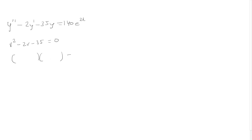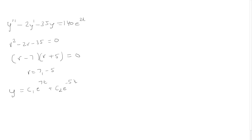This factors into r minus 7 times r plus 5, giving roots r equals 7 and r equals negative 5. So the homogeneous solution is a constant times e to the 7t plus another constant times e to the negative 5t.